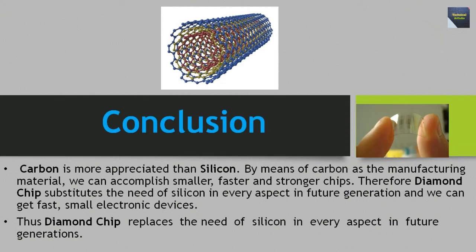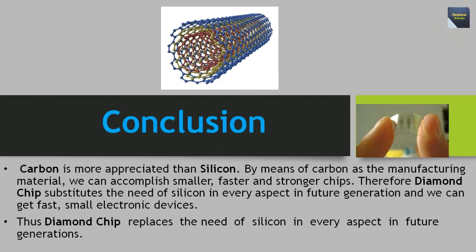To conclude the topic of diamond chip: carbon is more appreciated than silicon. By using carbon as the manufacturing material, we can achieve smaller, faster, and stronger chips. Therefore, diamond chip substitutes the need for silicon in every aspect in future generations, and we can get faster and smaller electronic devices. I hope you have understood today's topic, which was diamond chip.